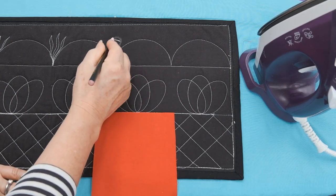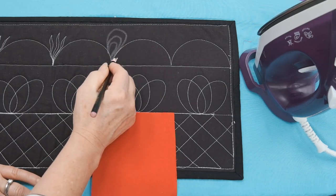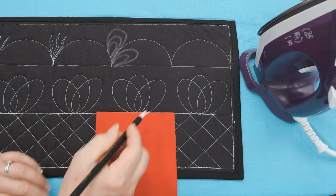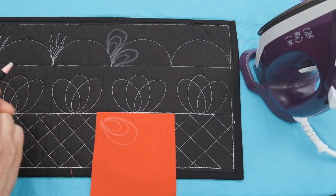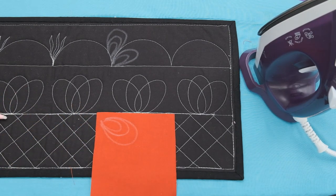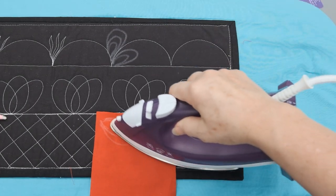It marks very clearly and even when you've got the basted fabric, it runs smoothly over it. It's great for medium and dark fabrics and when you're done, it erases with an iron.